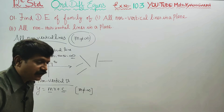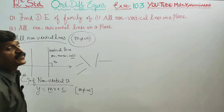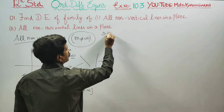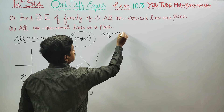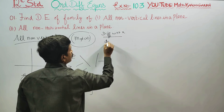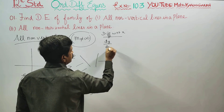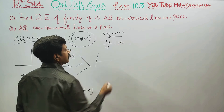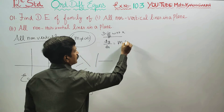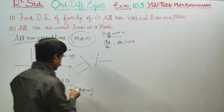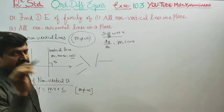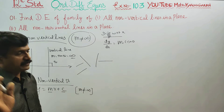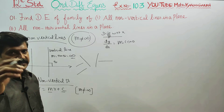This gives us the differential equation. If we differentiate y equals mx plus c with respect to x, we get dy by dx equals m. The constant c differentiates to zero. So the result after one differentiation is dy/dx equals m.